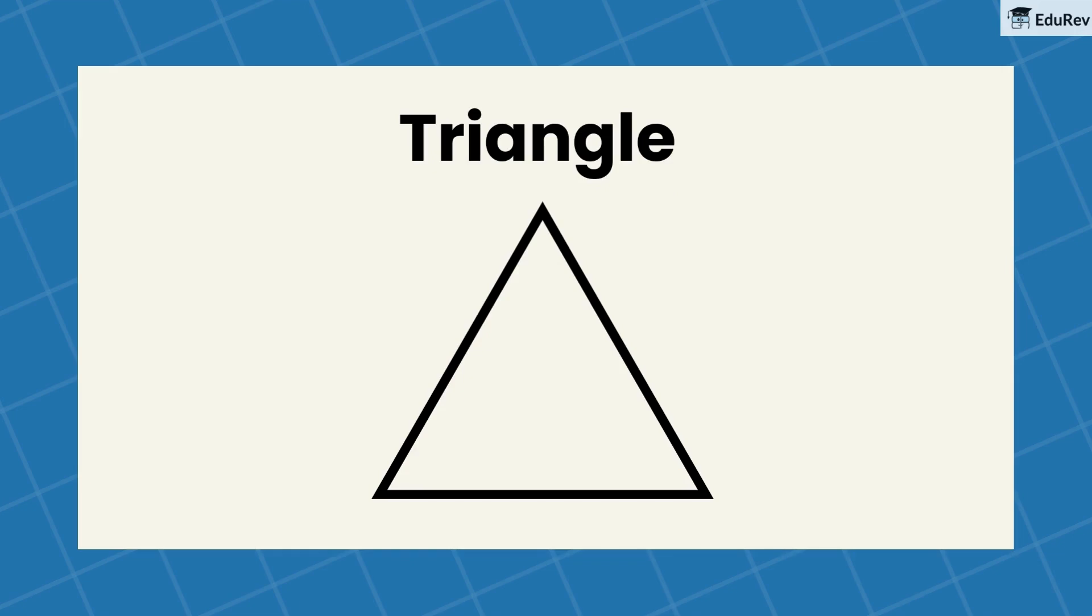Now, Bob is getting hungry. He wants to eat a sandwich. Seeing the sandwich, he wants us to find out about the shape of the sandwich as well. So, can you identify the shape of the sandwich? Yes, it is a triangle.